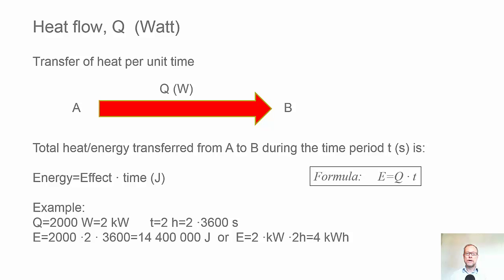An example: let's say Q equals 2000 watts or 2 kilowatts and it's transferred during a time of 2 hours, that's 2 times 3600 seconds. Then we have E equal to 2000 times 2 times 3600, that's 14.4 million joules. We can also use the unit kilowatt hours for energy. Then we multiply the number of kilowatts, which is 2, and multiply it with the number of hours, which is 2. That makes 4 kilowatt hours.